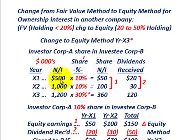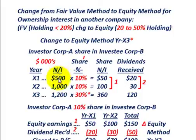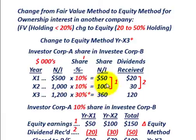Everything is in thousands of dollars, so 500 represents $500,000. For year X1, net income of Corp B was $500,000; Corp A gets 10%, giving a share of net income of $50,000. In year X2, net income was $1 million, so 10% gives $100,000 to Corp A. And then in year X3, there was $1.2 million in net income by Corp B, and Corp A gets 30% for $360,000.